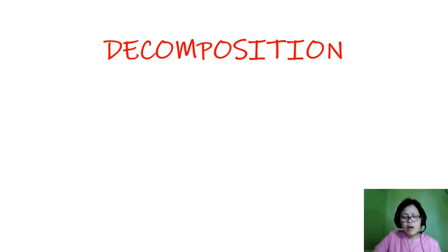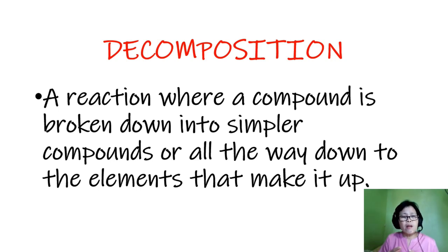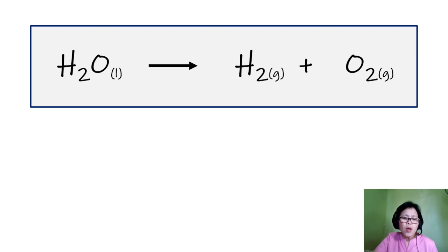Now let's move on to decomposition reaction. Decomposition is kind of the opposite of synthesis: in synthesis you put things together, but in a decomposition reaction a compound is broken down into simpler compounds or all the way down to the elements that make it up. For example, water breaks down to hydrogen and oxygen gas — those are the elements that make it up. In a decomposition reaction, you don't have to break things all the way to basic elements; you can also break them into simpler compounds.